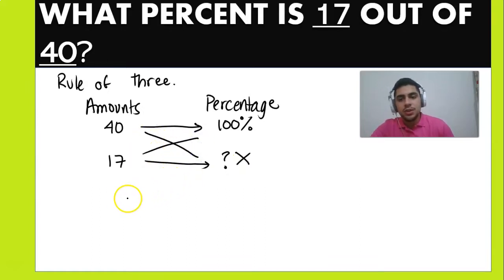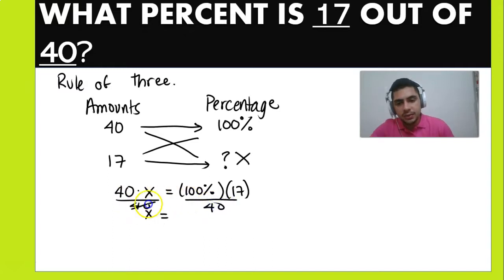X, we can divide both sides by 40, so we get the value of X, X alone. And X is going to be equal to 100 percent multiplied by 17, and then that divided by 40. So let's try doing that. 100 multiplied by 17 is 1700, and we're going to divide that by 40.